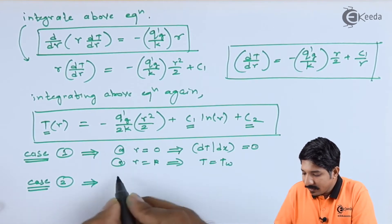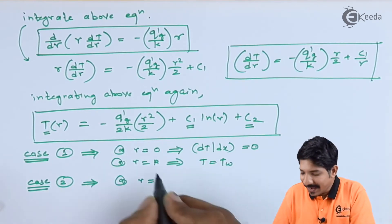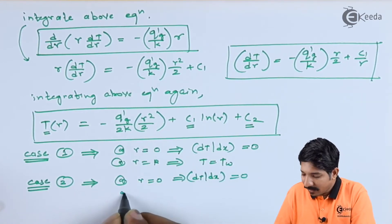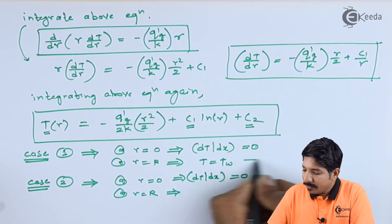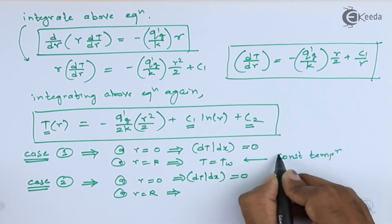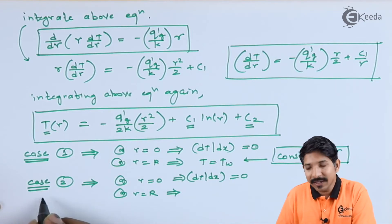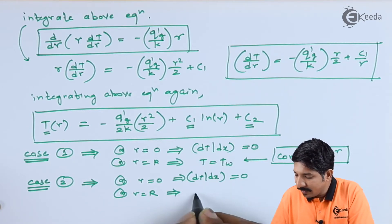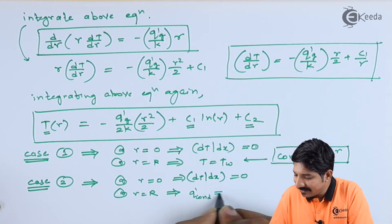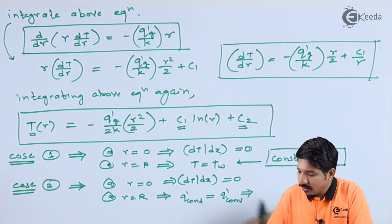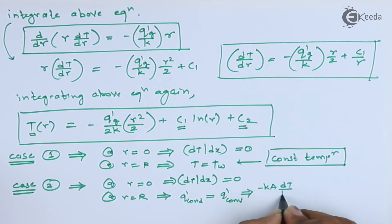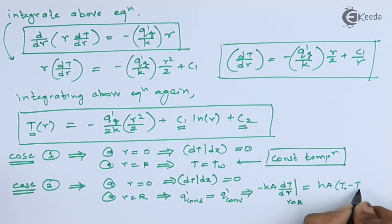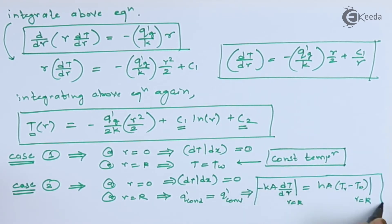The second case: the first boundary condition remains the same — at r = 0, dT/dr = 0. But at r = R, instead of constant temperature, we consider convection at the outer surface of the cylinder. The boundary condition becomes: heat conducted equals heat convected, i.e., -k A dT/dr at r = R equals h A [T(R) - T∞].